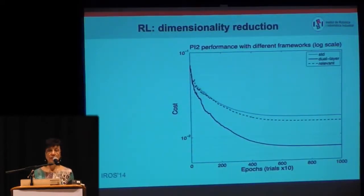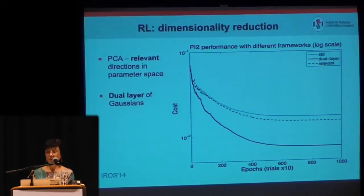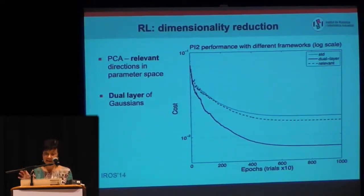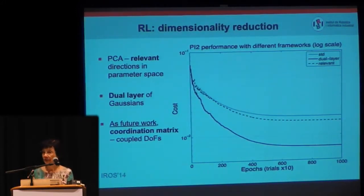As you know, reinforcement learning has a problem in that high dimensionality makes it very costly to search in parameter space. So we have devised several procedures to reduce dimensionality of the search space, namely the parameter space, by searching only along relevant directions, by introducing a second layer of Gaussians. The first layer is frozen to the first demonstration, and then the search in the parameter space is done in a fewer set of Gaussians. As future work, we plan to reduce the coordination matrix by exploiting that many degrees of freedom in this task are coupled, so they do not need to be treated independently.